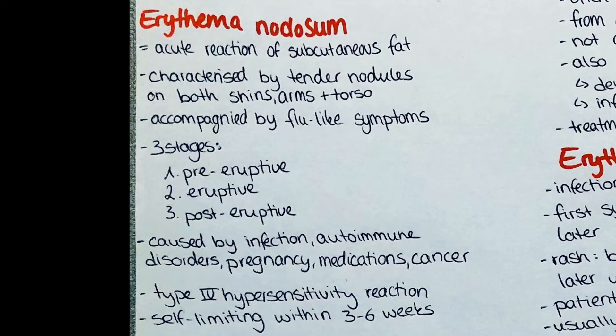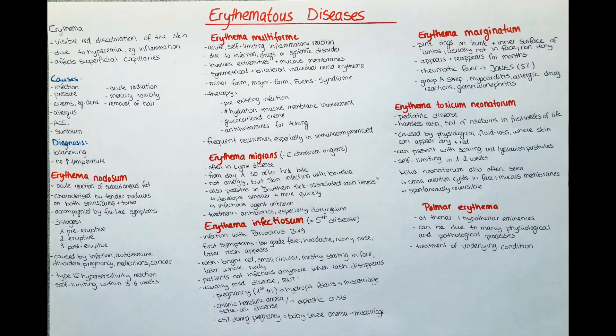Now let's talk a little bit more about the different types of erythematous diseases. In this video I will explain erythema nodosum, erythema multiforme, erythema migrans also called erythema chronicum migrans, erythema infectiosum also known as fifth disease, erythema marginatum, erythema toxicum neonatorum and finally palmar erythema.